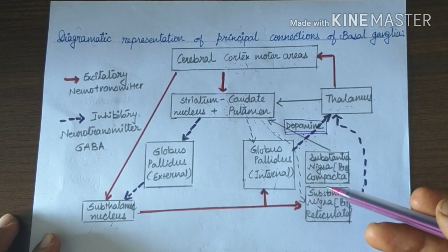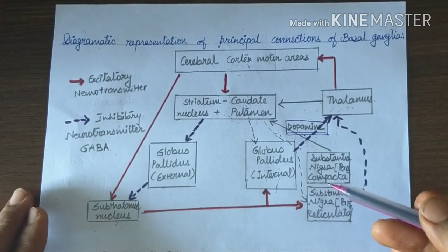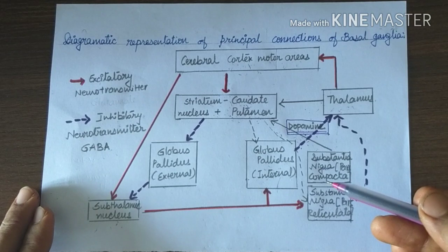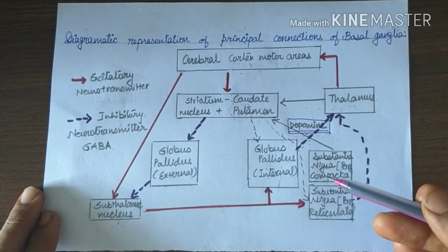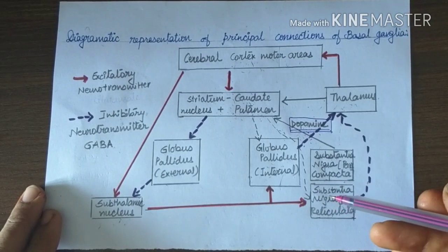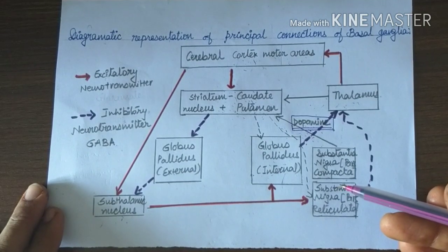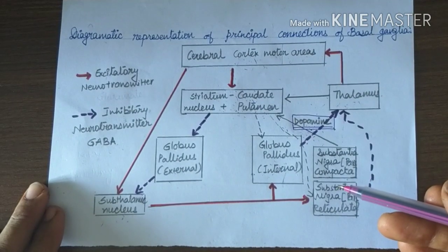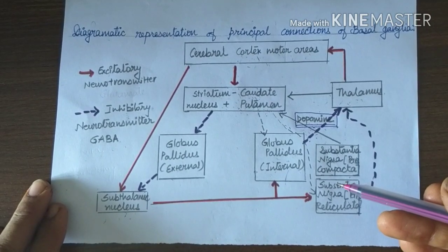Another mode of treatment is dopamine secreting tissue implanted either in or near the basal ganglia. For example, patient's own adrenal medullary tissue or carotid body. They secrete dopamine and can be used, but long-term results are not satisfactory. Instead of that, fetal striatal tissues can be used as a transplantation and their results are better than adrenal or carotid body transplant.